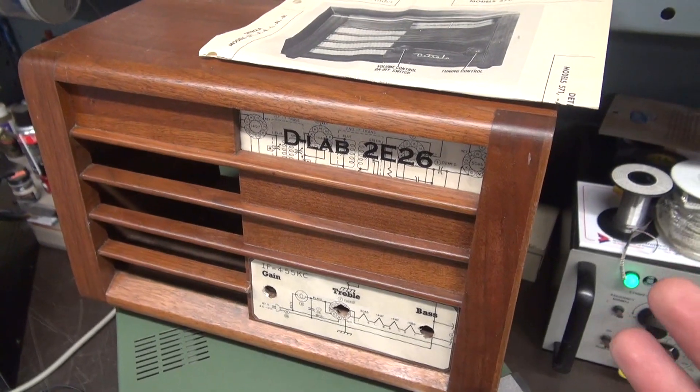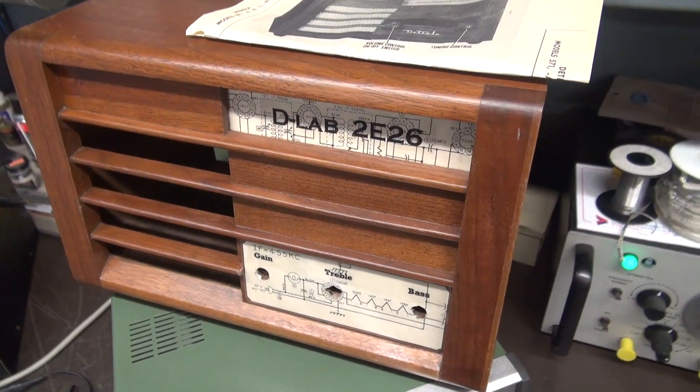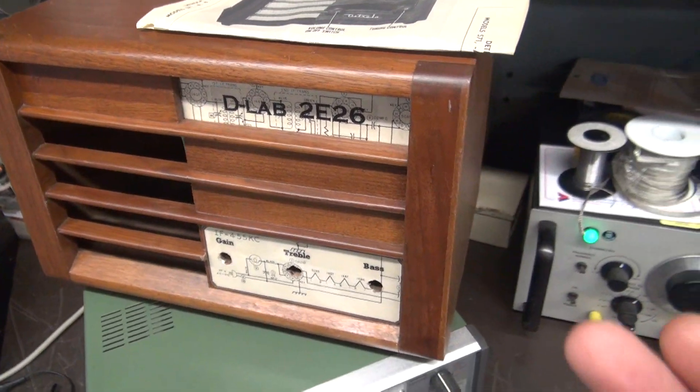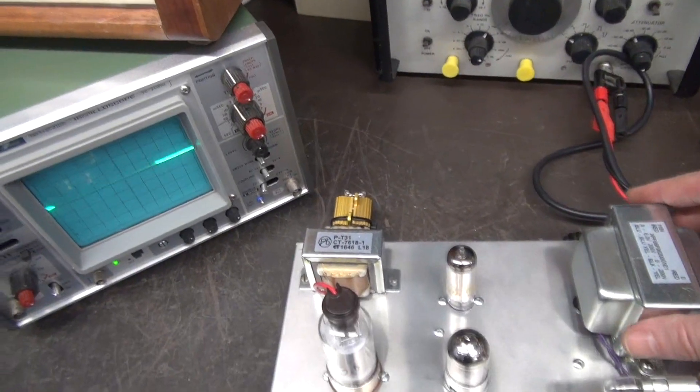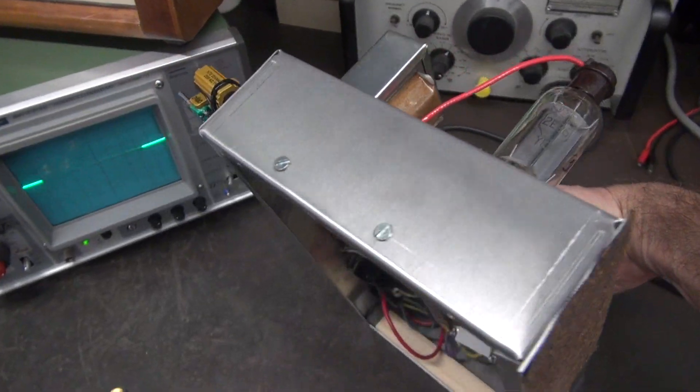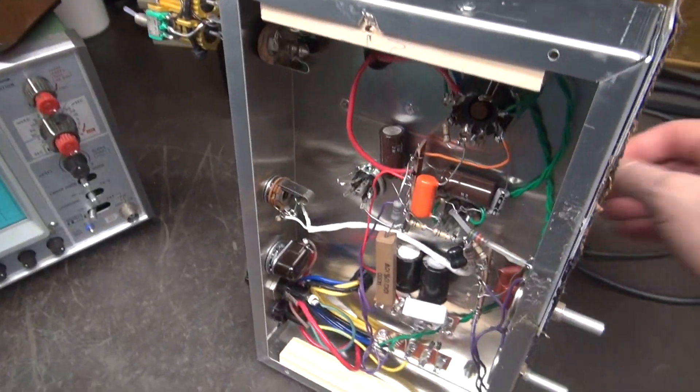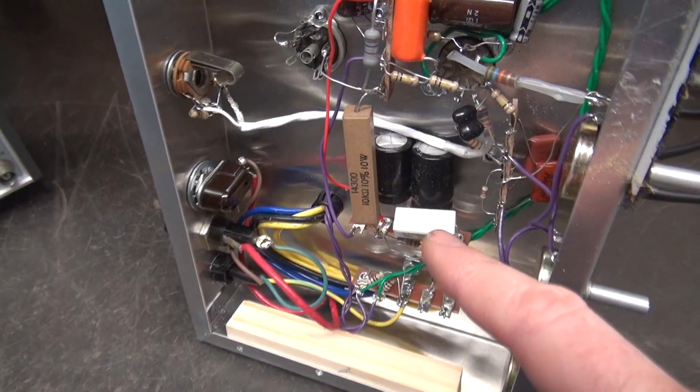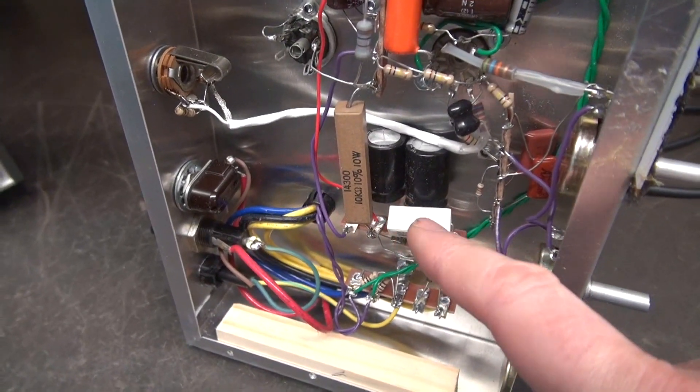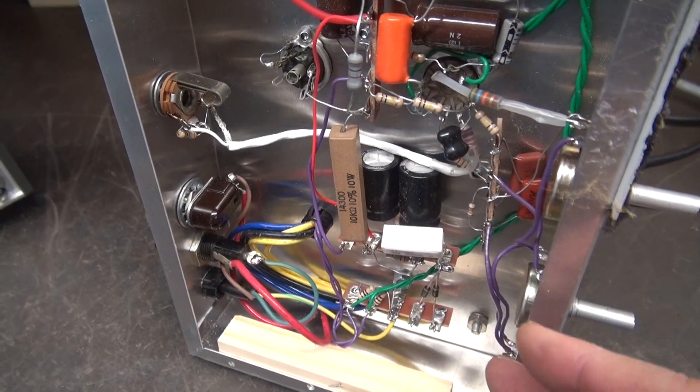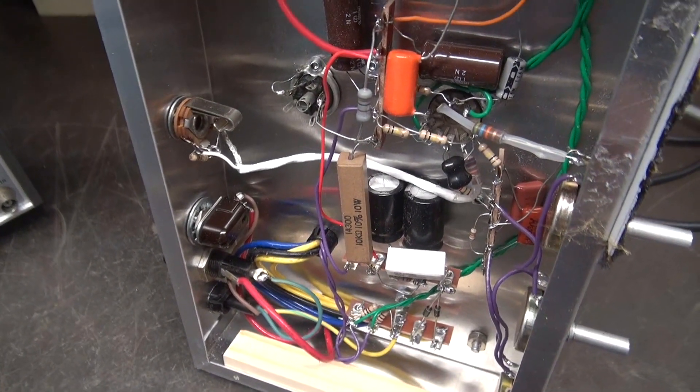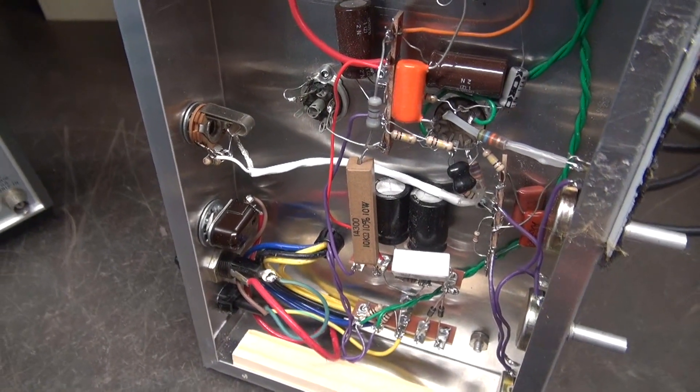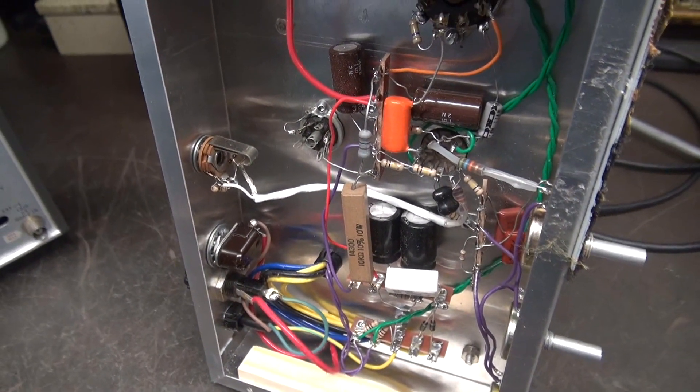When I was making the new D-Lab 2E26, I came up with some ideas for improving the power supply and putting less heat inside of the chassis, and that involved removing the 5.6K resistor that you saw on the original schematic and changing it with a 10K 10 watt. Still does the job, there's less heat, you still get the great regulated screen voltage as before. So let's cut to the schematic and I'll show you the changes.